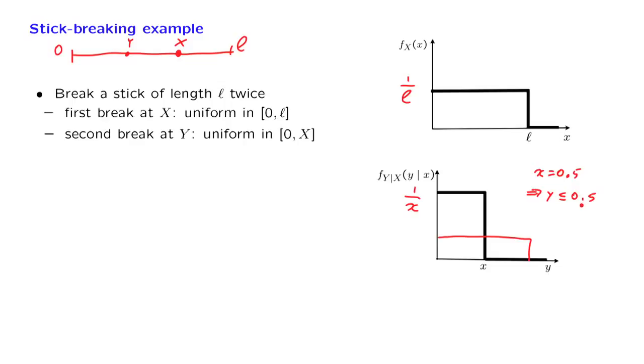Notice that in this example, instead of starting with a full description of the random variables in terms of a joint PDF, we use a marginal PDF and then a conditional PDF to construct our model. Of course, with these two pieces of information, we can reconstruct the joint PDF using the multiplication rule. The marginal is 1 over L. The conditional is 1 over X. So the joint is equal to 1 over LX.